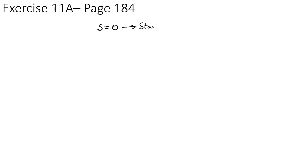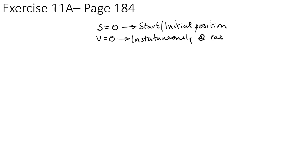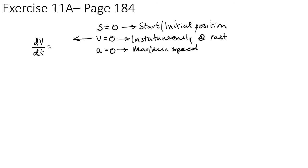You should now be able to do Exercise 11a on page 184. Remember: s = 0 means the object has returned to its start or initial position; v = 0 means the object is instantaneously at rest; a = 0 may indicate a maximum or minimum speed. Also note that setting dv/dt = 0 gives the value of t for maximum or minimum velocity, which you then substitute back into the equation.